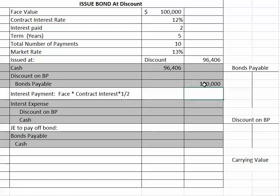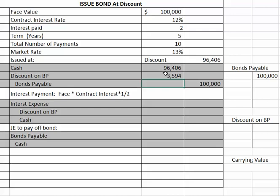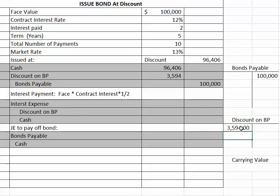Even though we only received $96,406, we have to pay back $100,000. Looking at the journal entry, you can see you need a debit for the difference between those two amounts. So discount on bonds payable is $3,594. Discount starts with a D and debit starts with a D, so discount on bonds payable is always going to have a debit balance.